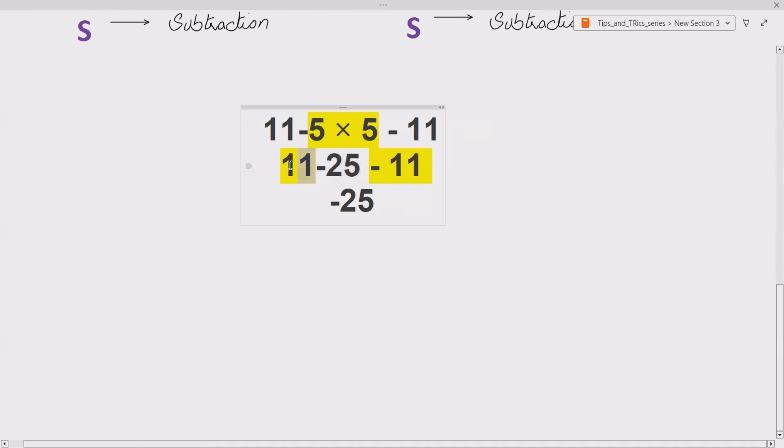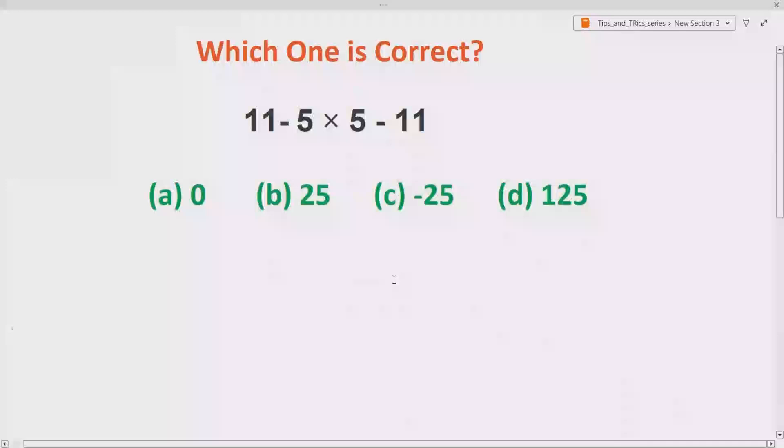Now here you can see we have 11 minus 25 minus 11. So 11 and minus 11 will cancel out and we only remain with minus 25. So the correct answer is part C.